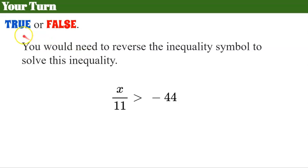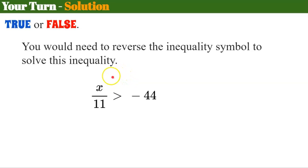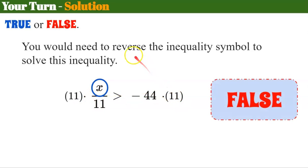True or false: you would need to reverse the inequality symbol to solve this inequality. To solve, we identify x is being divided by positive 11, so we multiply both sides by positive 11. That is false — we are multiplying by a positive value. You do not reverse the symbol when you multiply or divide by a positive number, only when you do so by a negative number.